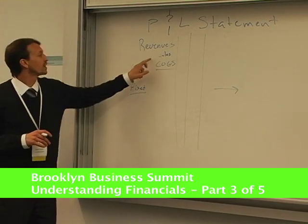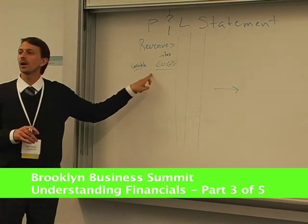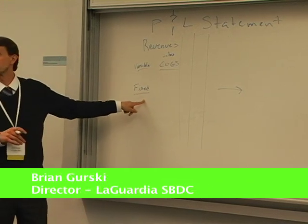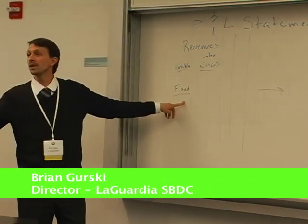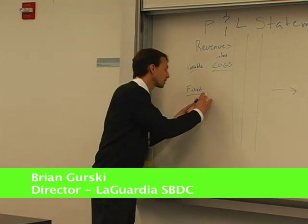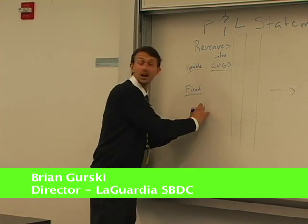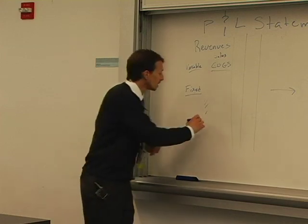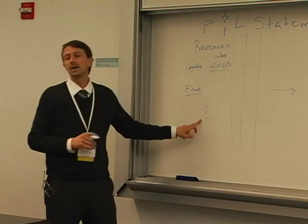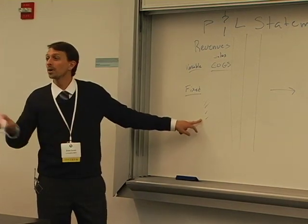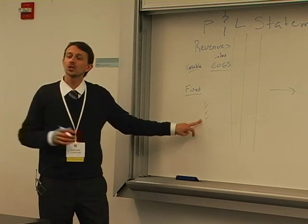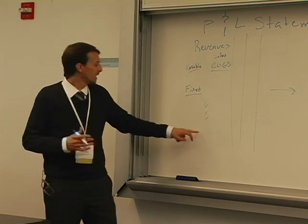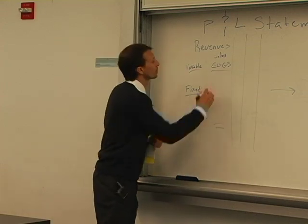So you have your revenues and then you have the costs, the cost of the goods that you're selling. Then you have your fixed expenses, and we can immediately think of a whole bunch of things: waste management, rent, salaries, utilities, water, trash. You have a whole bunch of things that come into regular play for your business, and then that gets you your total here.